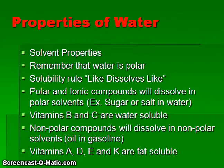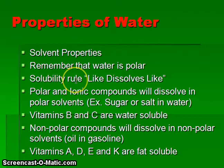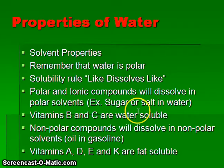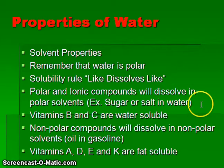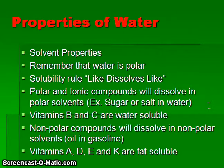Yet another important property of water is that it is a very good solvent, due to water being a polar molecule. Our solubility rule is 'like dissolves like.' This means polar substances such as sugar, and ionic substances such as salt, will dissolve very well in water. Vitamins B and C are water-soluble, meaning we need a constant supply because they are continuously lost by our bodies.